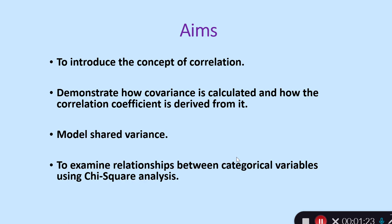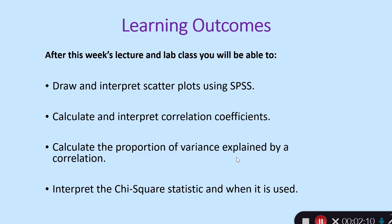The aims of the content we're going to cover this week: in this lecture and lab classes we're going to introduce the concept of correlation, demonstrate how covariance is calculated and how the correlation coefficient is derived from it. There are two steps to working out correlation coefficients such as Pearson's r. We'll also look at modelling shared variance and its use when controlling for third or fourth variables, and examine relationships between categorical variables using chi-square analysis.